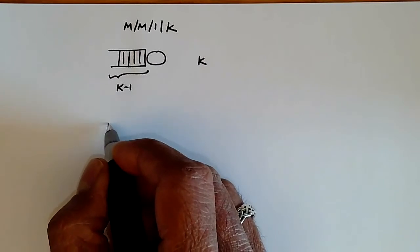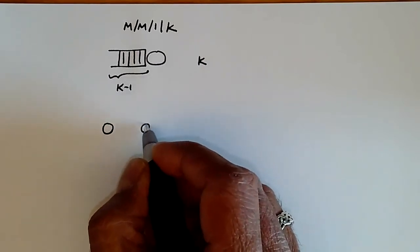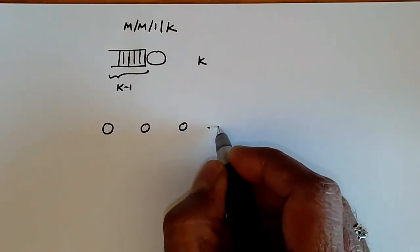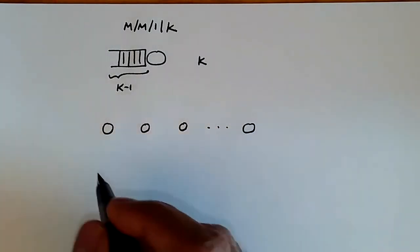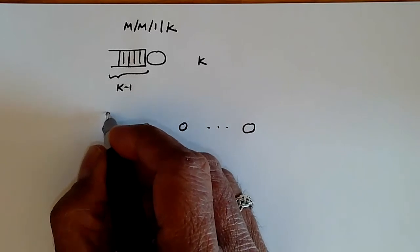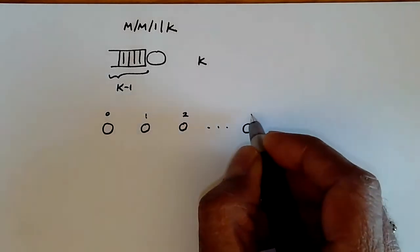So, again, we start drawing the state transition diagram. So we have a set of states like this. And now we have a bounded number of customers. So the number of states will be 0, 1, 2, et cetera, until k.